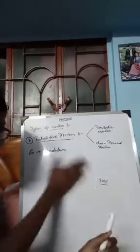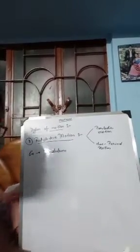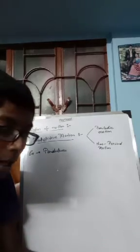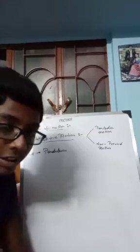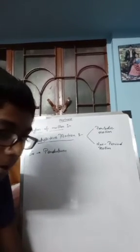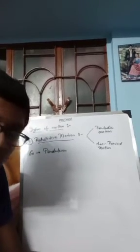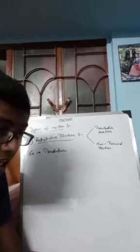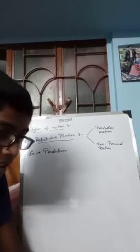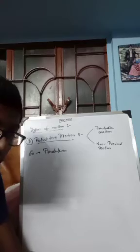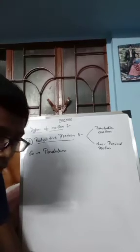Non-periodic motion is motion that repeats itself but not after a regular interval of time. Examples include: swaying of branches of a tree, motion of our lungs during breathing, swinging of our arms and legs while walking, and motion of a rolling ball on the floor.